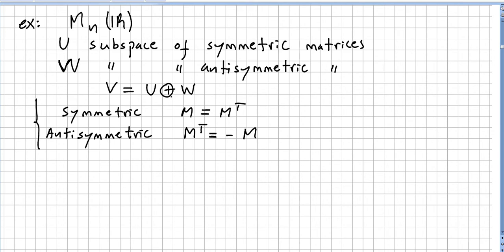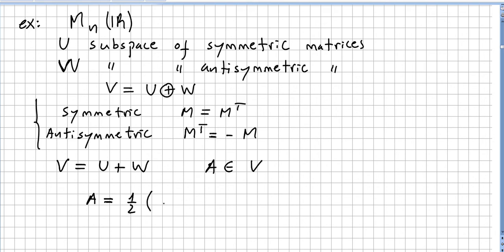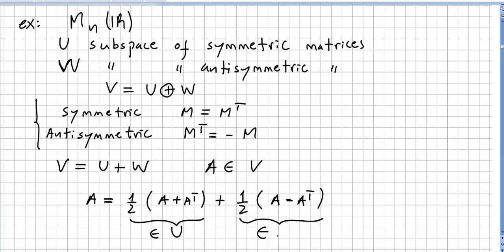Let us see that V is the direct sum of the subspace of symmetric matrices and the subspace of anti-symmetric matrices. Let us first check if V is equal to the sum of U and W. We pick an arbitrary matrix A in the vector space V.